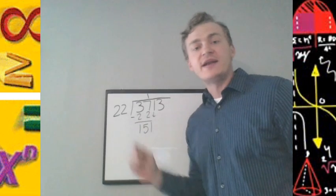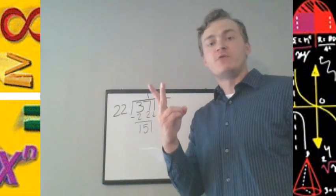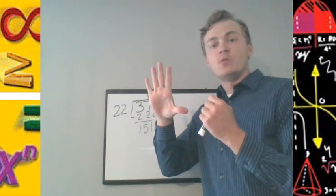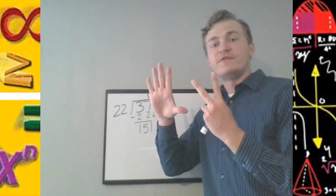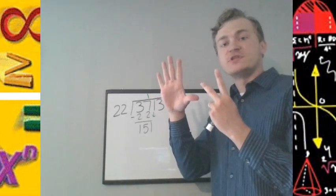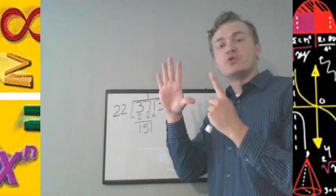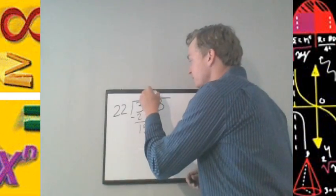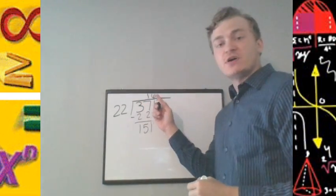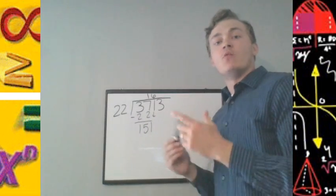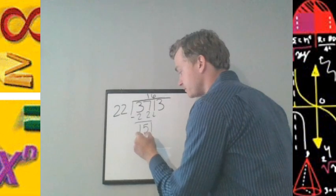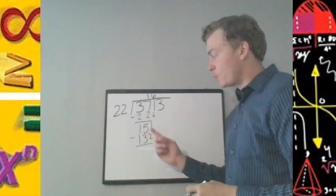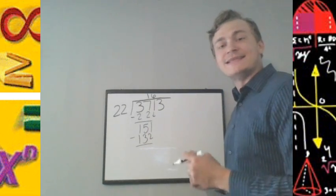151 divided by 22, well, 22, 44, 66, 88, 110, 132, 154. Can't be 154, so we'll stop at 132. 22 will go into 151 six times. As we just saw, 6 times 22 is 132. Subtracting this, 151 minus 132 is 19.